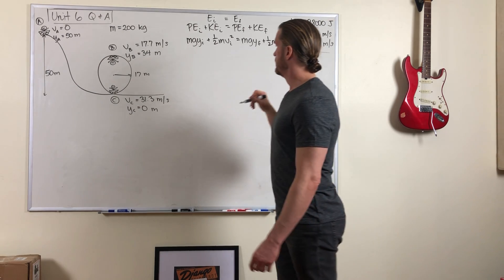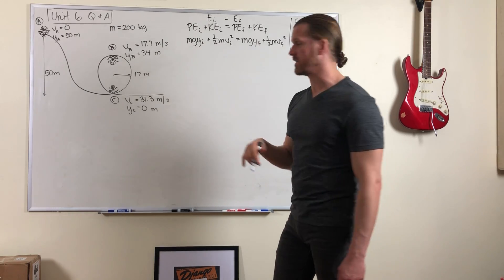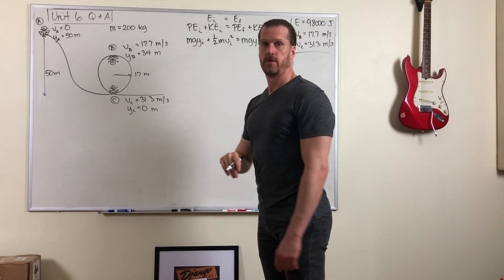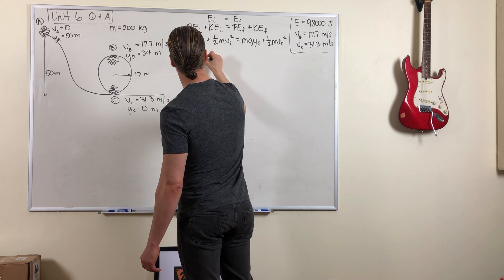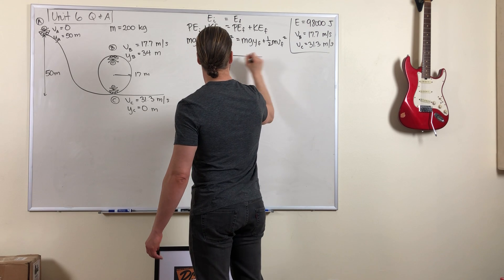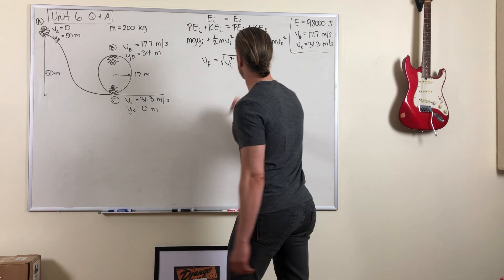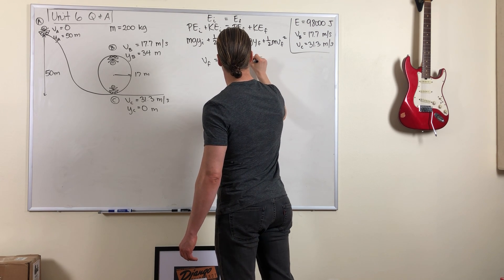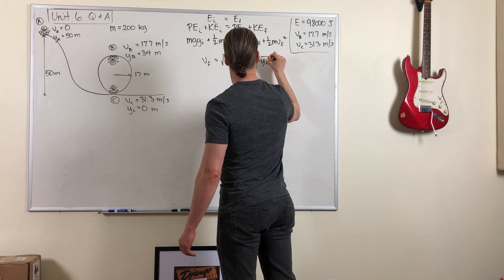And we were asking the first time we did this problem about the speeds. And so when you do a bunch of algebra here, you can find that the final speed equals square root of initial speed squared plus 2g times y initial minus y final.